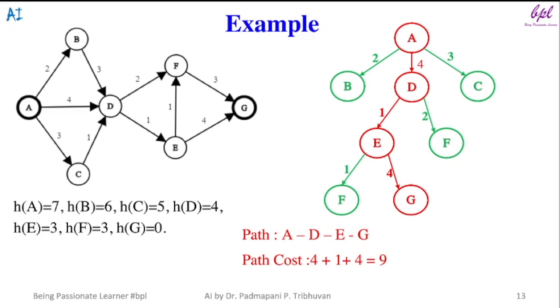And the path cost is 4 plus 1 plus 4 equals 9. Always remember, greedy best-first search uses only heuristic values to select node for exploration. It does not use edge cost.